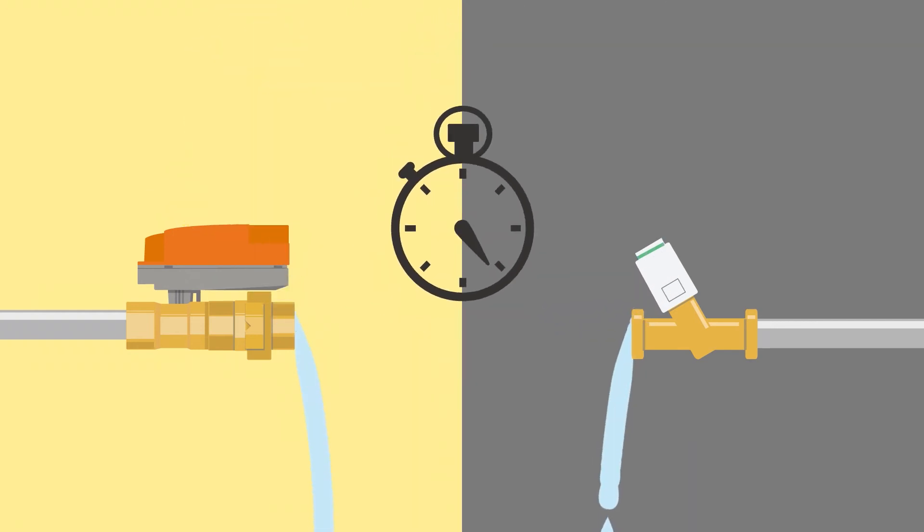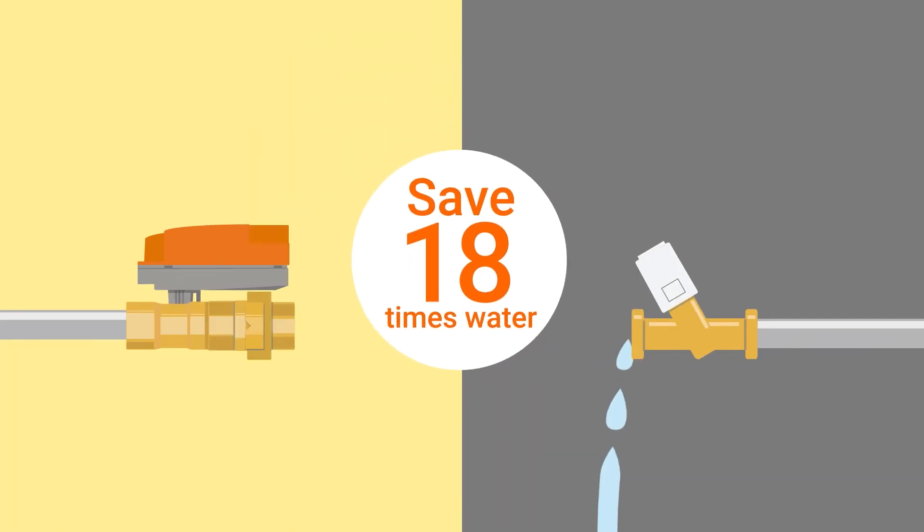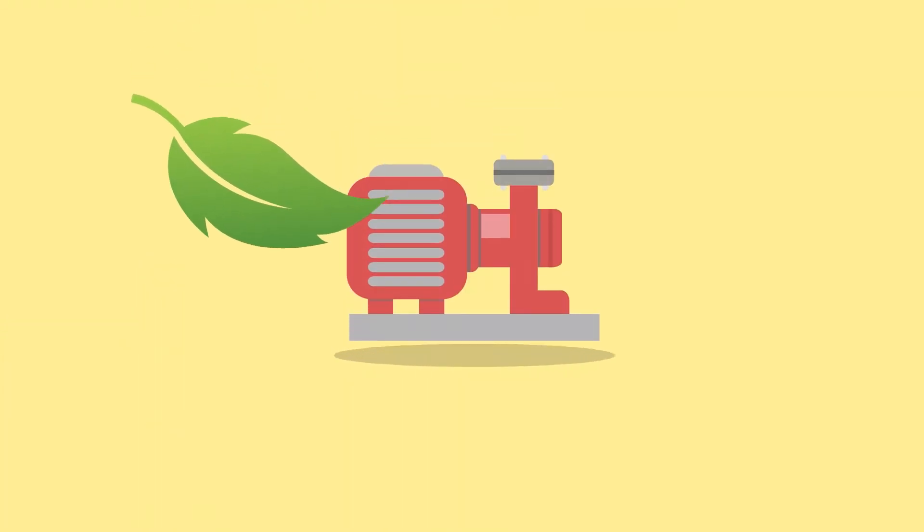Every single open or closed cycle takes only 75 seconds. And with zero leakage, you save up to 18 times more water and save on pump energy.